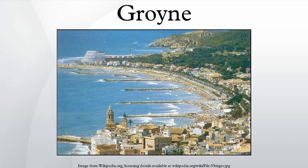In coastal engineering, a groin's length and elevation, and the spacing between groins, is determined according to local wave energy and beach slope. Groins that are too long or too high tend to accelerate down-drift erosion because they trap too much sediment. Groins that are too short, too low, or too permeable are ineffective because they trap too little sediment.